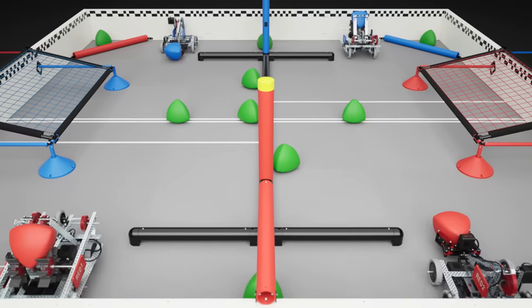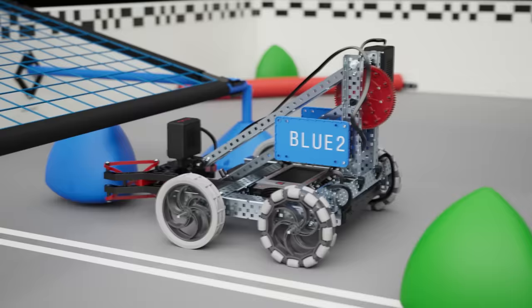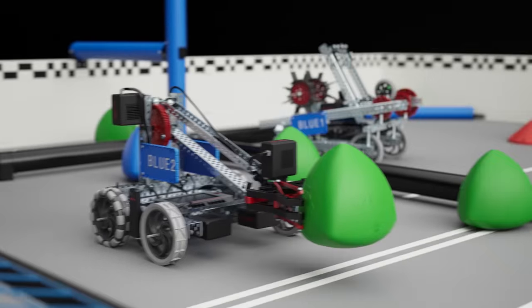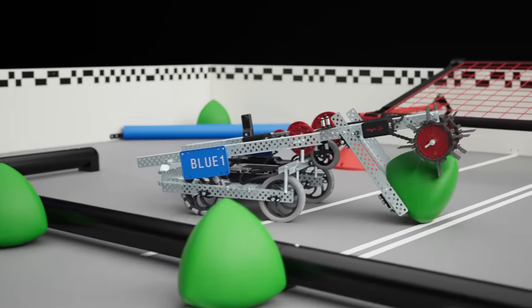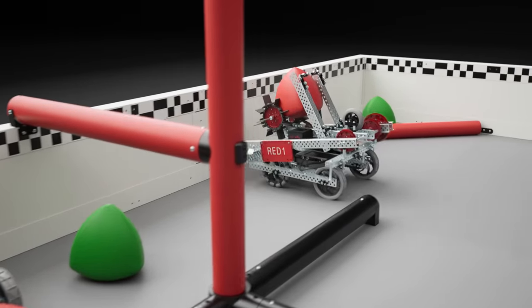Matches begin with a 15-second autonomous period where robots operate without input from their drivers. During the autonomous period, alliances must keep one robot in their offensive zone and one robot in their opponent's offensive zone. Robots begin with one alliance-colored tri-ball as a preload.